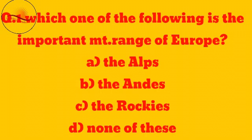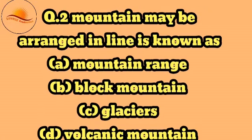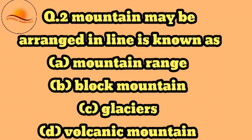First question: Which one of the following is the important boundary of Europe? Next question: A mountain arranged in a line is known as?